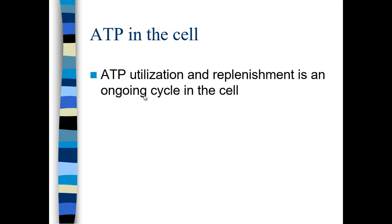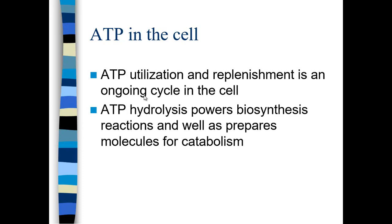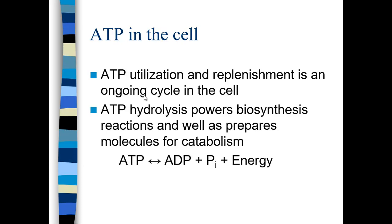ATP is always being utilized to provide energy for chemical reactions. When it's utilized, it has to be replenished as an ongoing cycle in the cell. ATP is distributed throughout the cell to enable metabolism. ATP hydrolysis — the reaction where ATP is broken down to ADP — powers biosynthesis reactions and prepares molecules like glucose for catabolism. ATP is broken down to ADP plus a free phosphate group, and that releases a significant amount of energy.